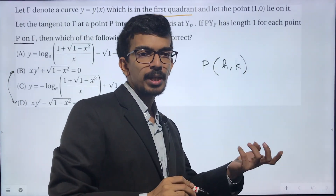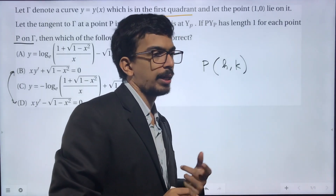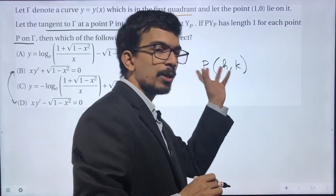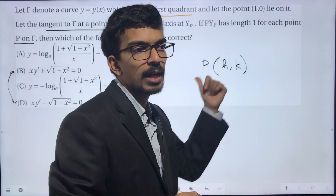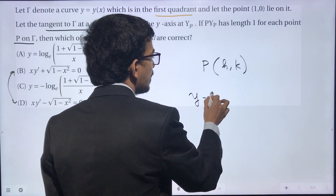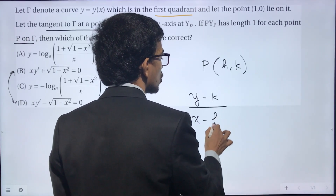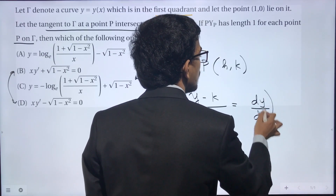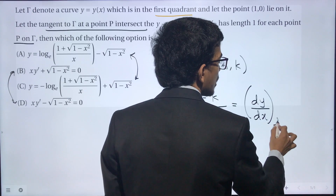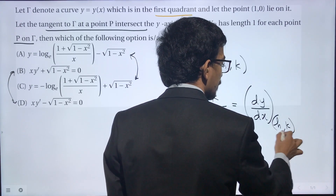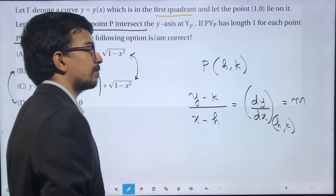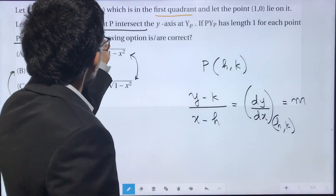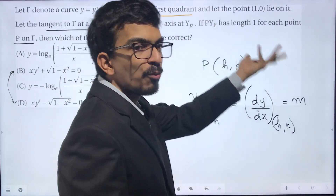P is some general point on the curve. We find the equation of the tangent at P: (y − k)/(x − h) = dy/dx evaluated at (h, k). Let's call this slope m. This is a straight line intersecting the y-axis at some point Yp.